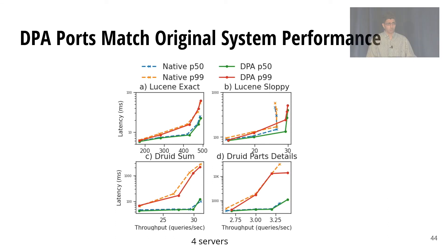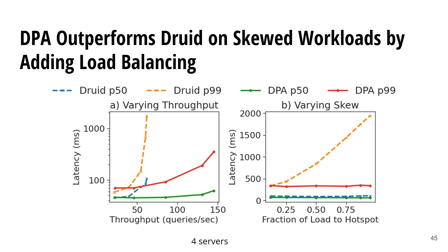Let's look at Lucene and Druid performance. We're comparing DPA-distributed Lucene to Solr, and DPA-distributed Druid to regular Druid. We're doing load-latency experiments — we increase offered load and observe the effects on actual throughput and latency. As you can see in these diagrams, the dashed and solid lines overlap, which means performance is roughly the same for the DPA-distributed systems and the natively distributed systems. This means we can use DPA to replace these specialized custom-built systems without sacrificing performance. In fact, we can actually improve performance under some circumstances — Druid natively doesn't have load balancing, so on highly skewed workloads some servers get overloaded. But DPA adds load balancing, so as skew increases, Druid performance drops off but DPA performance does not.